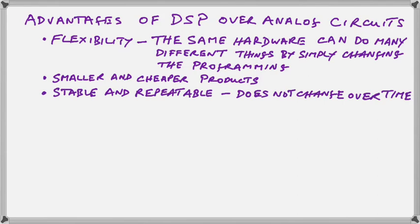We have a stable and repeatable system where the characteristics do not change over time. One of the most annoying things about analog electronics is that we constantly have to be calibrating and tuning and changing to make up for the normal aging of components.